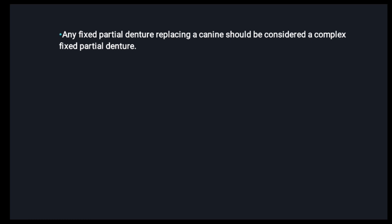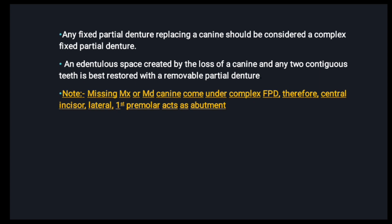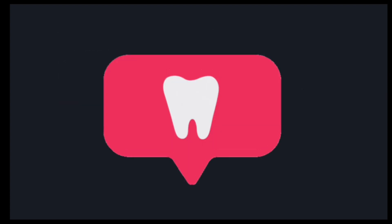One more crucial point: canine replacement in FPD. Any FPD replacing a canine should be considered a complex FPD. An edentulous space created by loss of a canine and any two contiguous teeth is usually best restored with an RPD. If you are to replace a missing maxillary or mandibular canine under a complex FPD, always use the central incisor, lateral incisor, and first premolar as abutments.